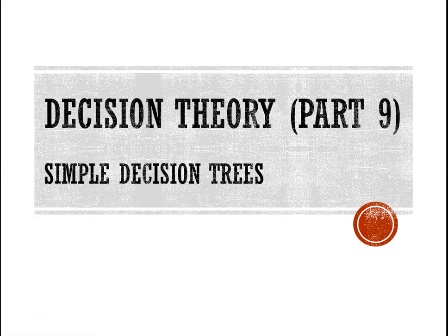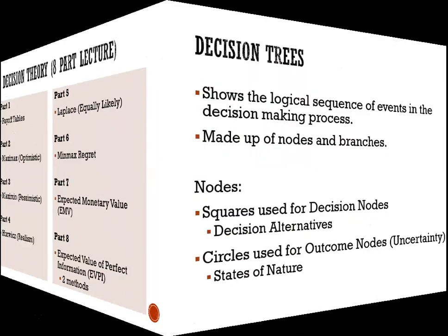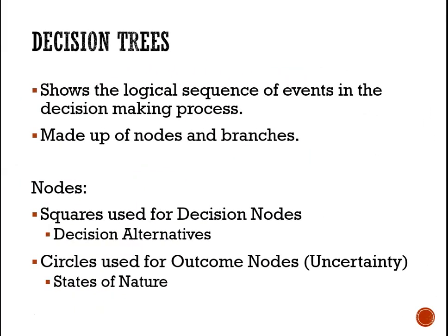Greetings and salutations. We are here at part 9 of our decision theory lecture series, where we look at simple decision trees. It was originally intended to be an 8 part series, and we have already looked at payoff tables, MaxiMax, Maximin, Hurwitz, Laplace, MinMaxRegret, expected monetary value, and the expected value of perfect information. We have now decided to throw in this extra lecture just to put the icing on the cake.